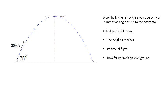So, a golf ball, when struck, is given a velocity of 20 meters per second at an angle of 75 degrees to the horizontal. Calculate the height it reaches, its time of flight, and how far it travels on level ground, its range. We call it the range of this projectile.